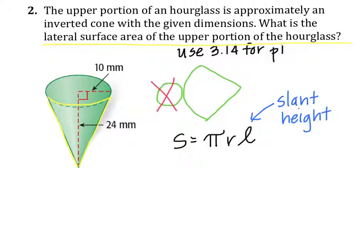Okay? So the slant height is, well, we don't know the slant height because they gave us the height of the cone. The slant height is this dimension right here, which we don't know. So it looks to me like we're going to have to figure it out by building a right triangle.